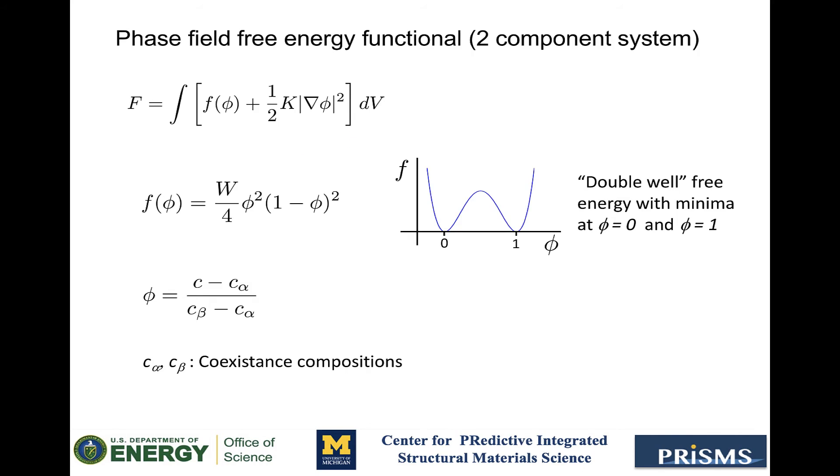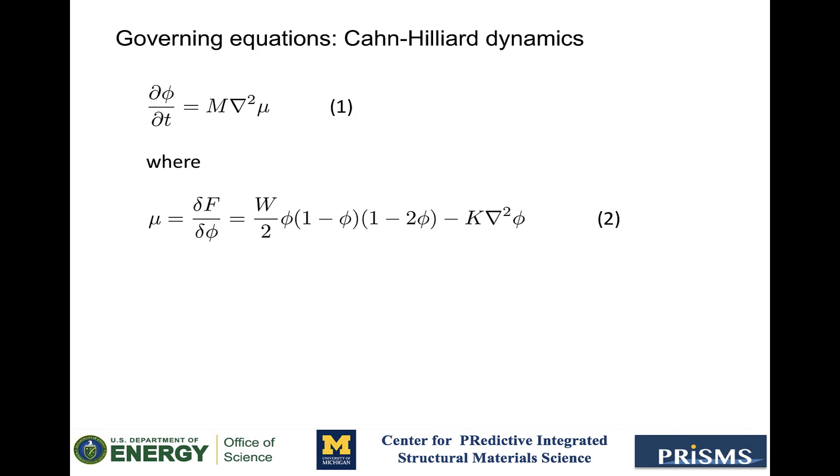Okay, for the phase field model, we can construct the exact same free energy that we have presented for the nucleation and growth example. This energy has a double well contribution and a gradient contribution. And here are the governing equations. We need to use the Cahn-Hilliard dynamics because of mass conservation. For example, sin phi represents the rescale concentration of a species. The total amount of these species should stay constant as the system evolves if there are no sources or sinks.